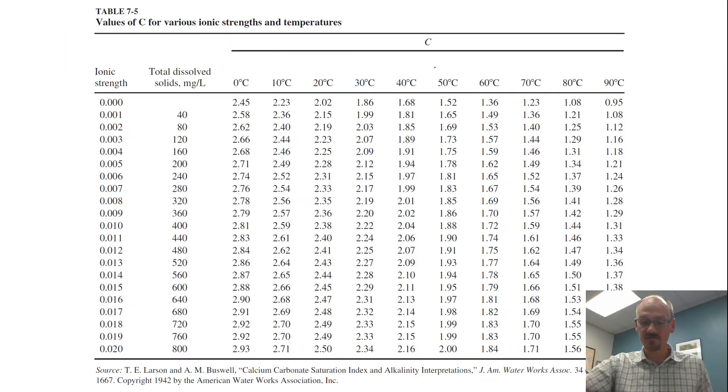The next thing we need to figure out is C, this constant in the LSI calculation. C is going to be something that's in table 7-5. We're going to use the fact that we have 560 milligrams per liter TDS and 12 degrees Celsius to look up in the table and find our value. Here is the table. The 560 milligrams per liter is here on the y-axis of the table. We have 10 degrees and 20 degrees C on the x-axis, so we'll need to interpolate to find something in between for 12 degrees C.